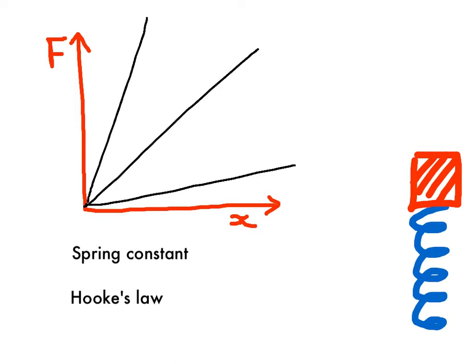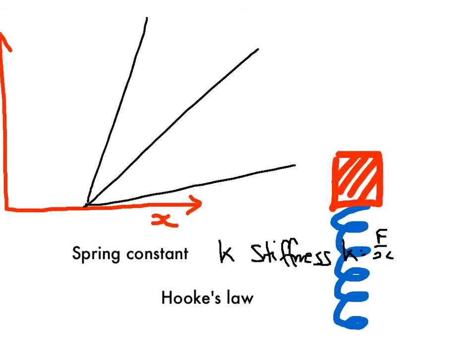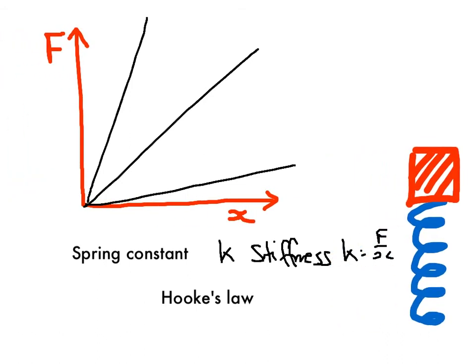And we call that gradient the spring constant. We give it the symbol k. And that's an indication of the stiffness of the spring. And so that's the gradient. And so we say that k, we work out the gradient as rise over run, so k is F over x. And we have a rule called Hooke's Law that the force applied to a spring is equal to the negative kx, where k is the spring constant.